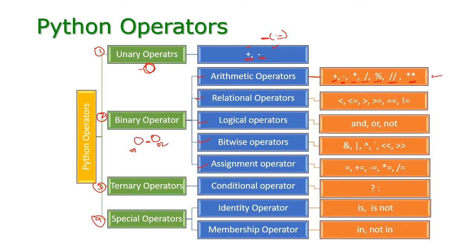The next one is relational operator. The result of relational operator will be either true or false — it compares two operands. The operators are: less than, less than or equal to, greater than, greater than or equal to, equal to, and not equal to. These are the relational operators.